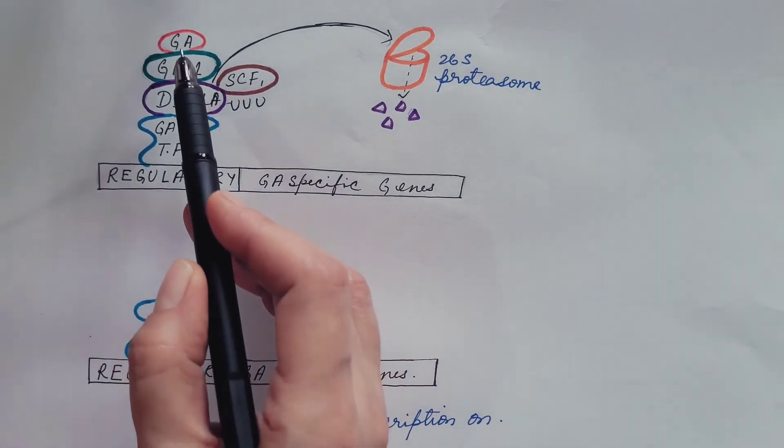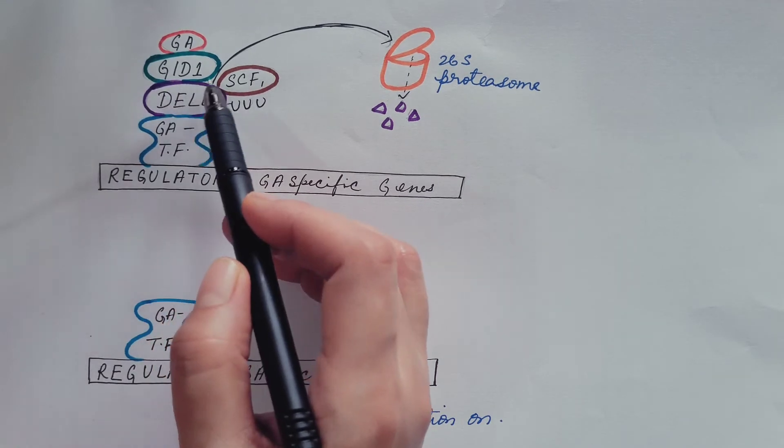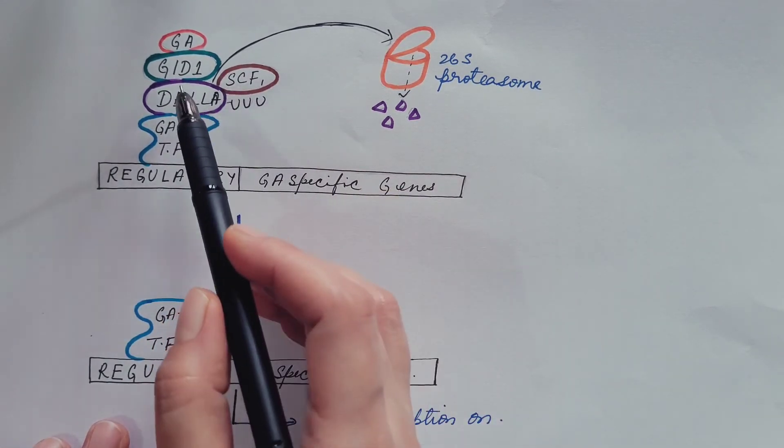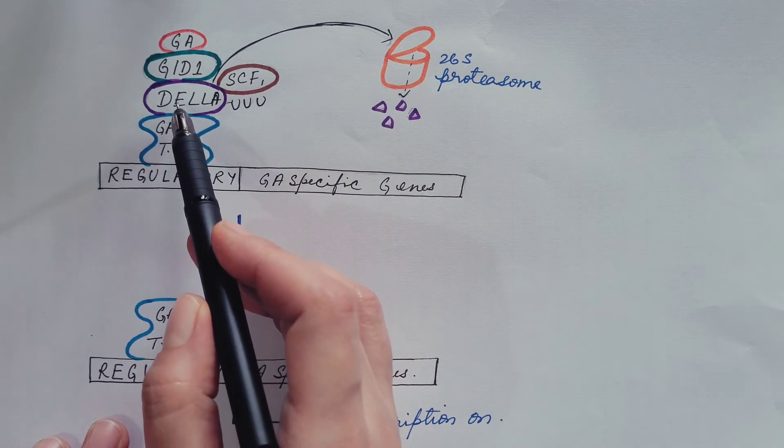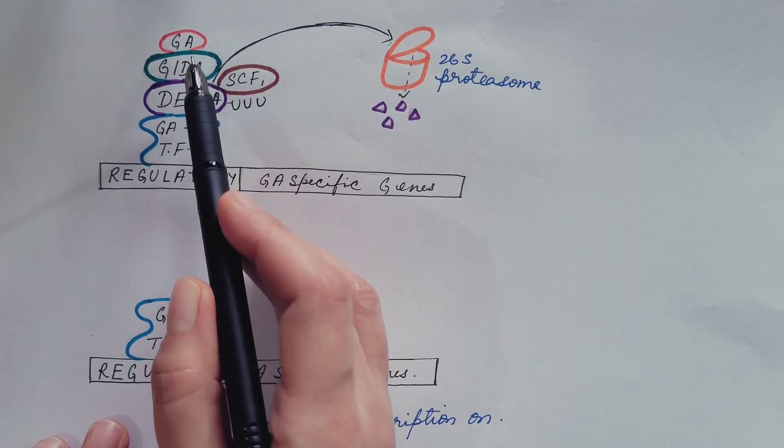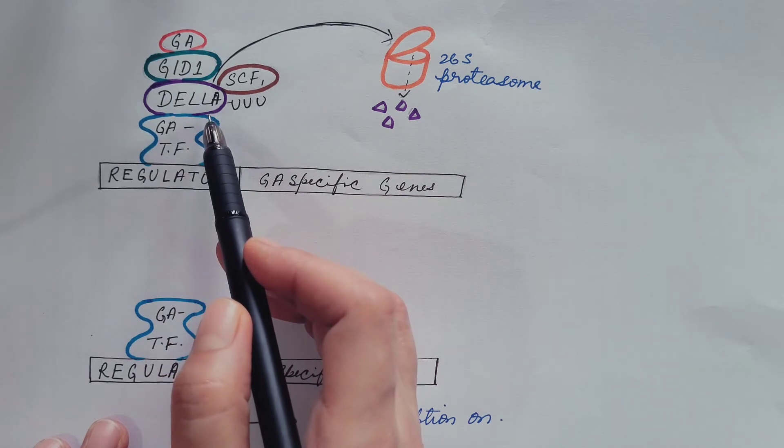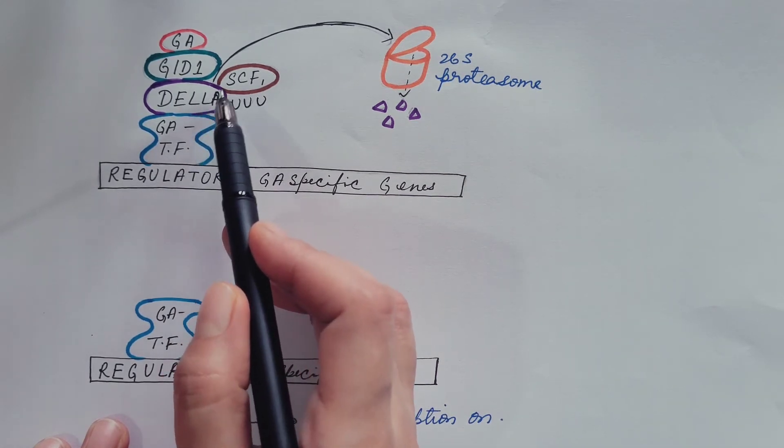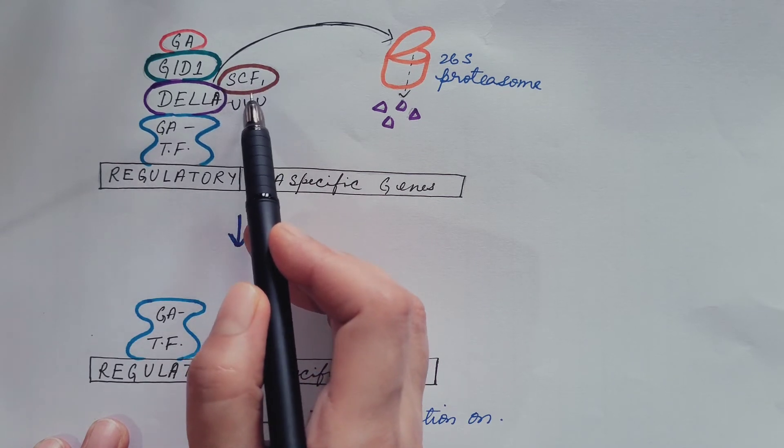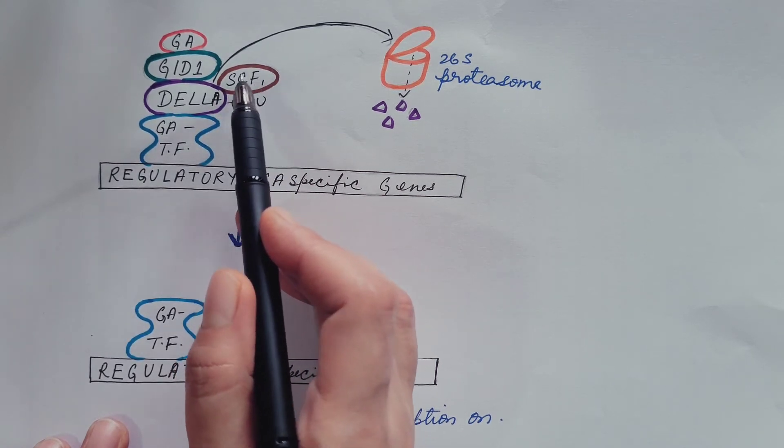Let us understand this with the help of a figure. Gibberellin binds with GID1 which then binds with DELLA protein. So GA-GID1-DELLA complex is formed which then enables DELLA to bind with F-box protein. Here it is SCFSLY1.